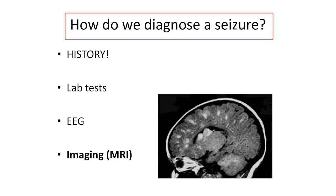We also use imaging — MRI scans, CAT scans. This is a very abnormal brain scan. You can see white spots diffusely located throughout the brain; each one could be a seizure focus or spot at which a seizure can begin. This particular child has tuberous sclerosis, another genetic disorder. It illustrates that we use imaging modality to help diagnose seizures.